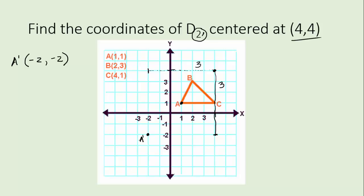Let's erase those marks and find B prime as another example. The horizontal distance over to B is two — double it, that will be four. That's the new horizontal distance. For the vertical distance, right now it's one. We need to double that, so it becomes two.